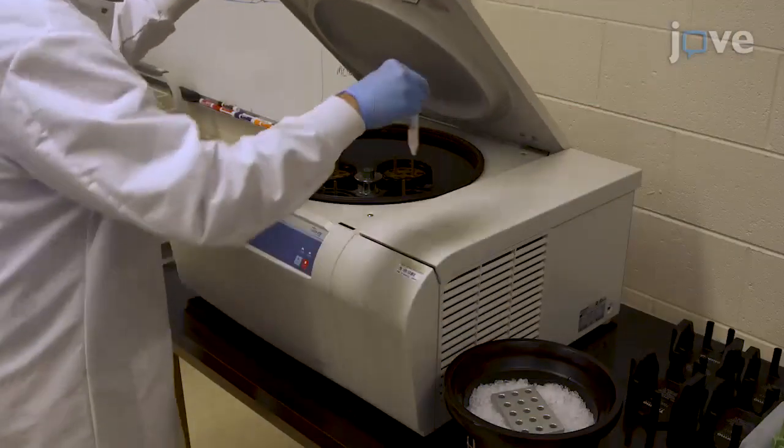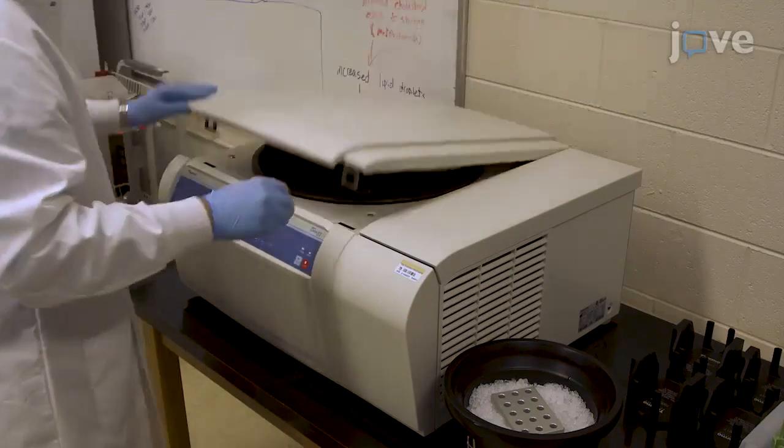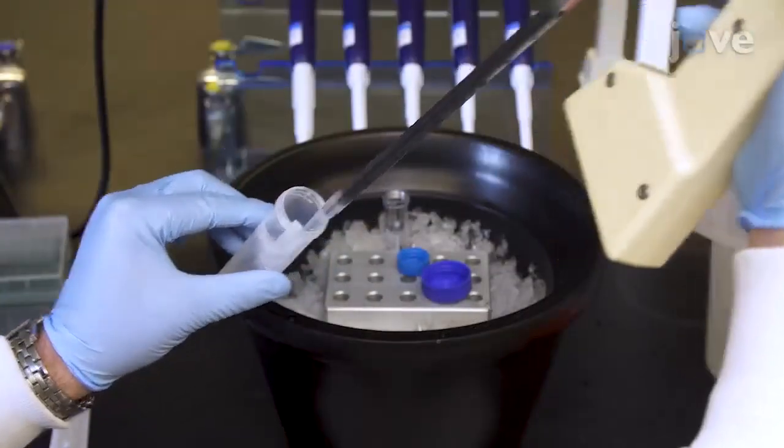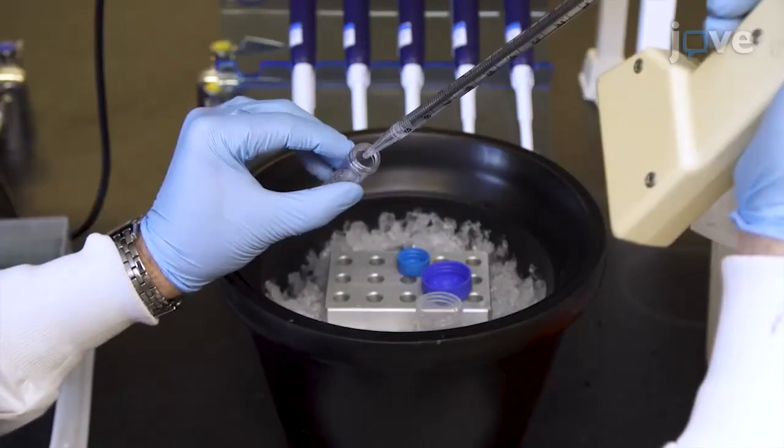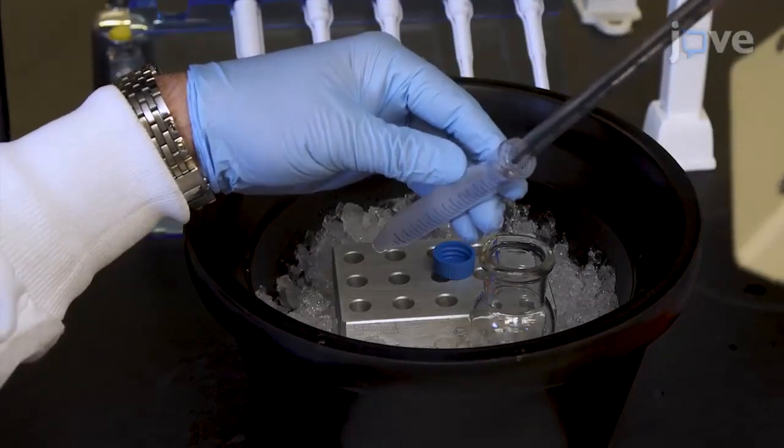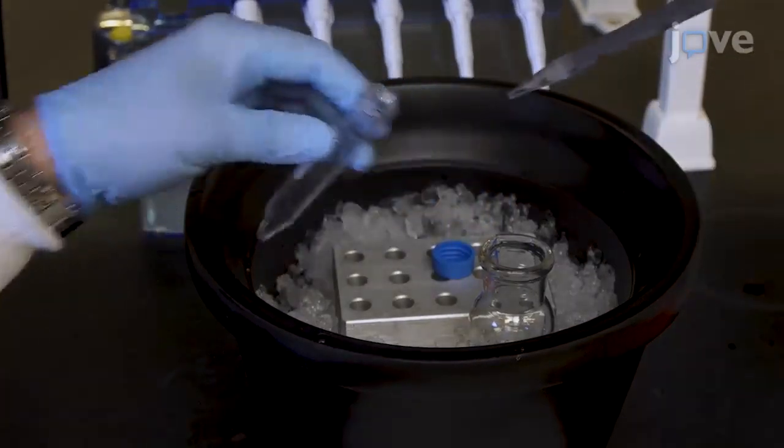Next pellet again at 2000 times G and 4 degrees Celsius for 10 minutes. Decant the buffer and resuspend with 2x original packed cell volume buffer A with protease inhibitors or phosphatase inhibitors.